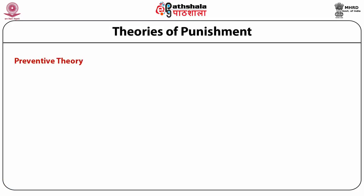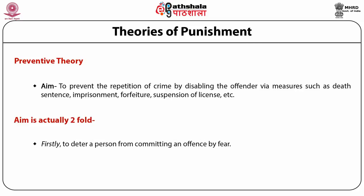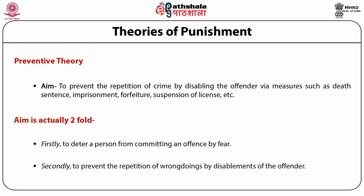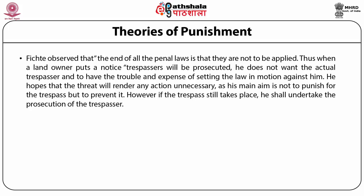There is also the preventive theory — to prevent the repetition of crime by disabling the offender via measures such as the death sentence, imprisonment, and forfeiture. Whatever spin you choose to give it — preventive, retributive, deterrent — the theory that is actually different is the reformative theory. The end of all penal laws is that they should not be applied. When you own land and put up a sign saying 'trespassers will be prosecuted,' you're putting that there because you don't want anybody to trespass — your hope is that it should not be applied. It's a preventive theory: if you trespass, you face consequences. As Oliver Wendell Holmes, the famous American judge said, there can be no case in which the lawmaker makes certain conduct criminal without showing a wish or purpose to prevent that conduct. Everything is preventive at the end of the day.